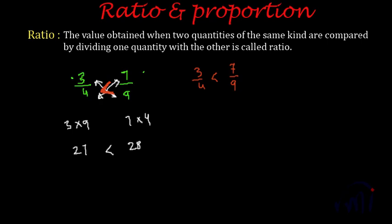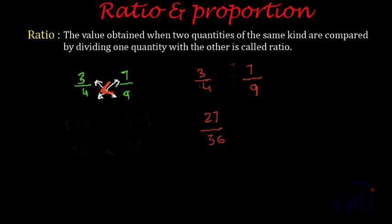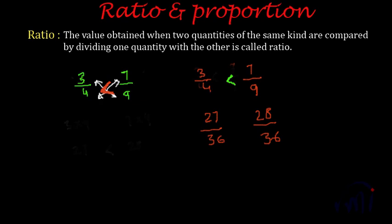A second method is to make the denominators the same and then compare the numerators. For 3:4 and 7:9, find the LCM of 4 and 9, which is 36 (since 4 and 9 have no common factors other than 1). Converting: 3/4 becomes 27/36, and 7/9 becomes 28/36. Since 28 is greater than 27, the ratio 7:9 is larger than 3:4. Same result as before.